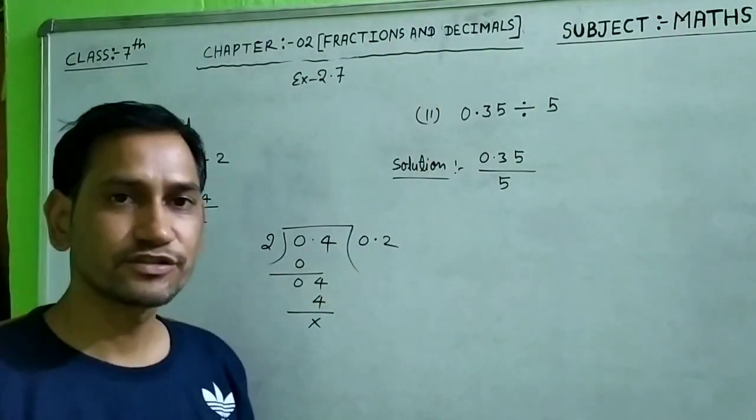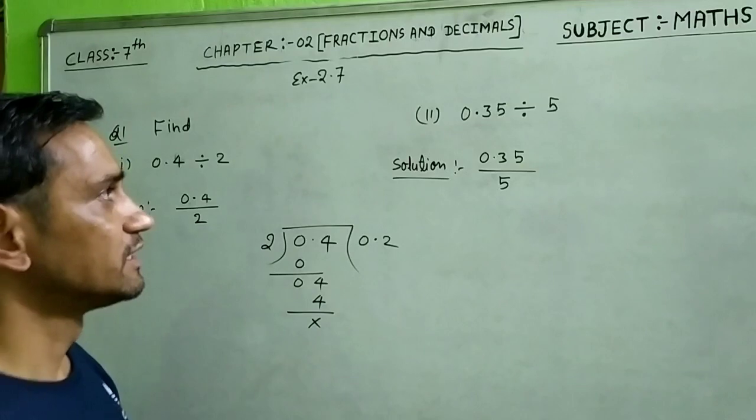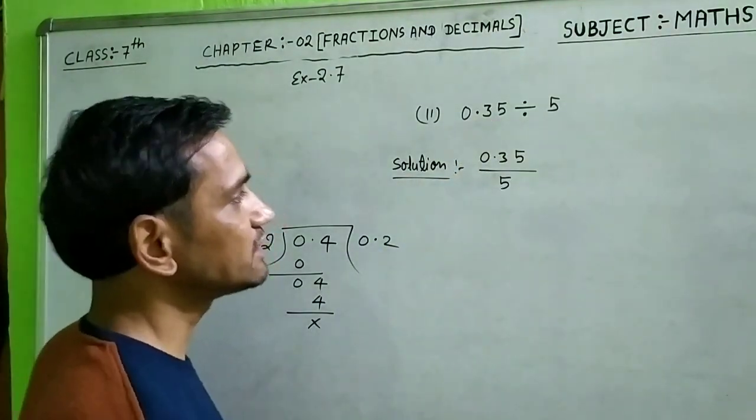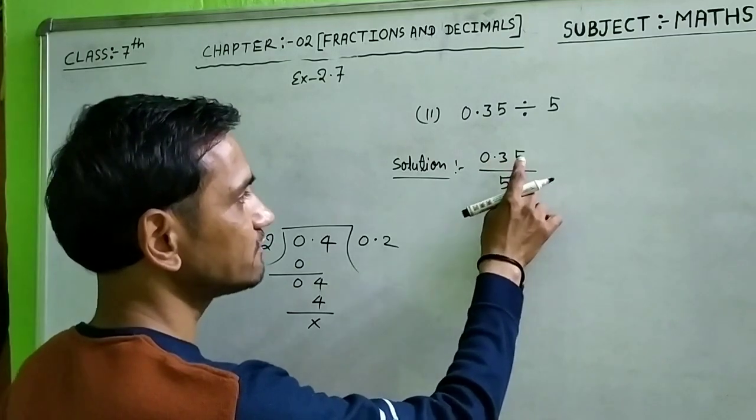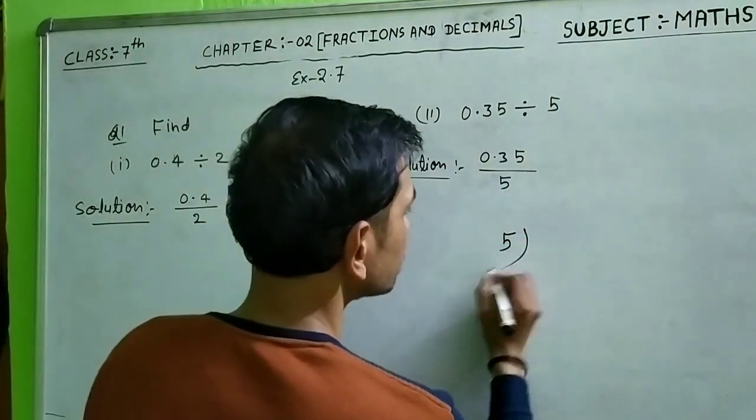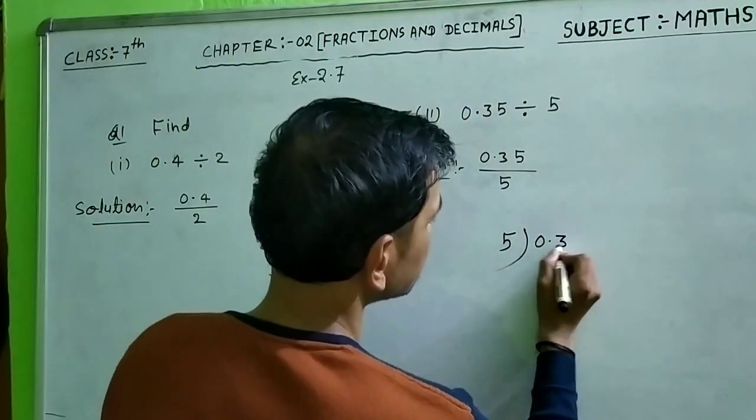Again student, second part: 0.35 divided by 5. Solution: 0.35 divided by 5, simply divide 0.35.